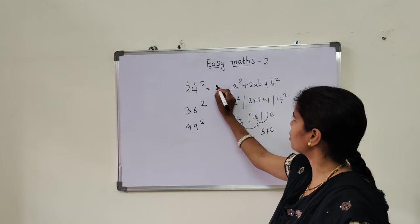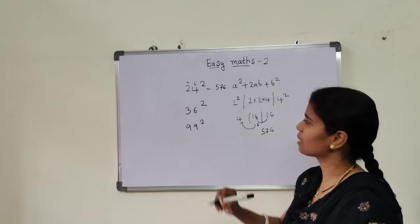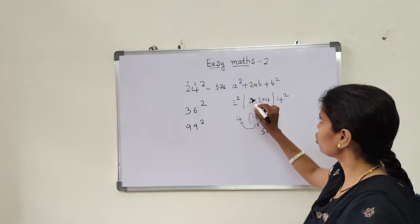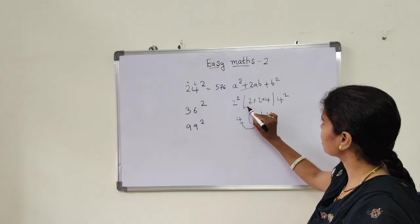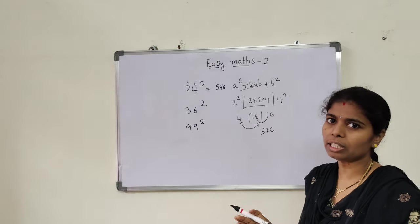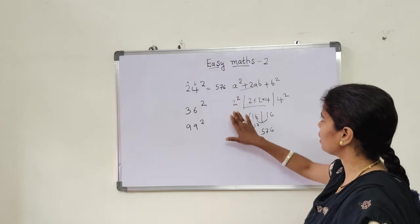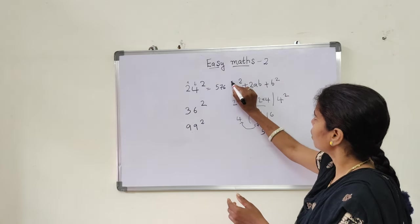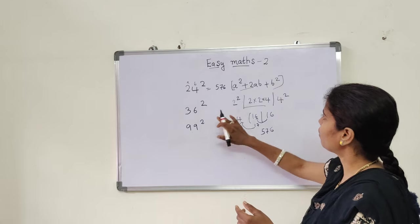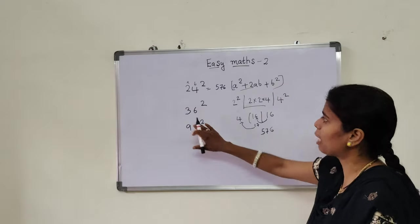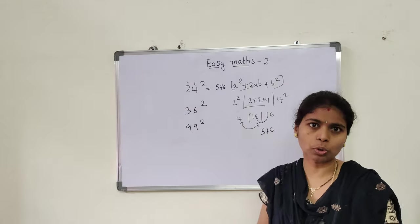Answer is 24 square is 576. First you should remember this one and this step. Then it will be very easy for calculation. And next one I am going to, without using this everything, just you remember this one. And without using this many steps, I will calculate in single step and show that problem.